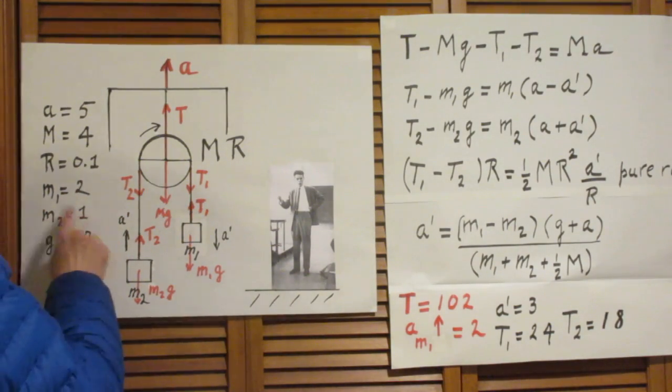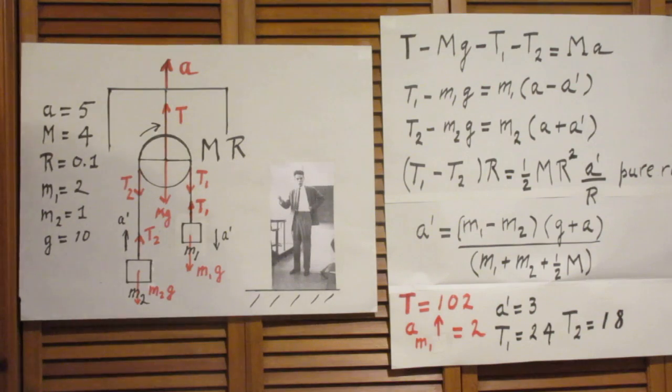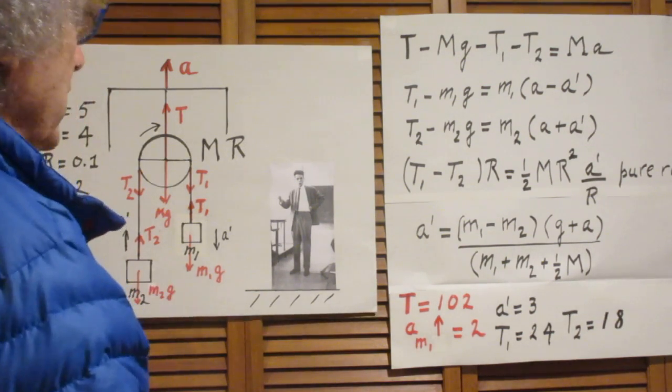m1 is 2 kilograms, m2 is 1 kilogram, and g is 10 meters per second squared.